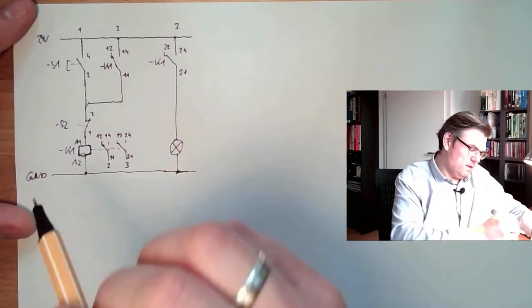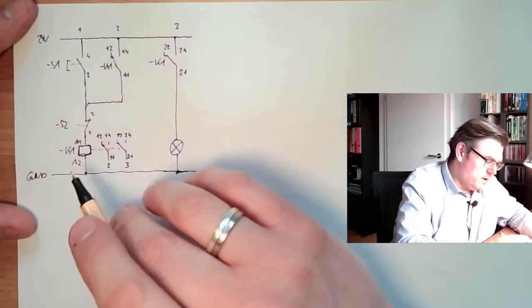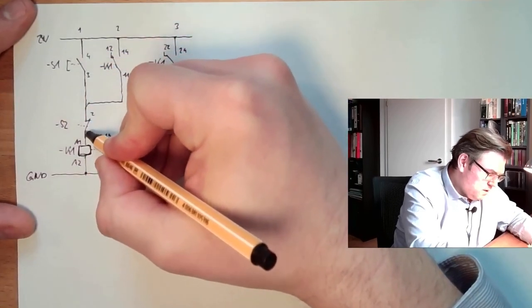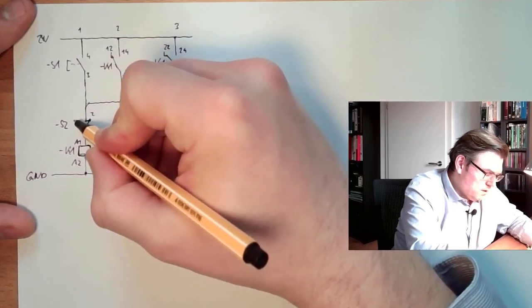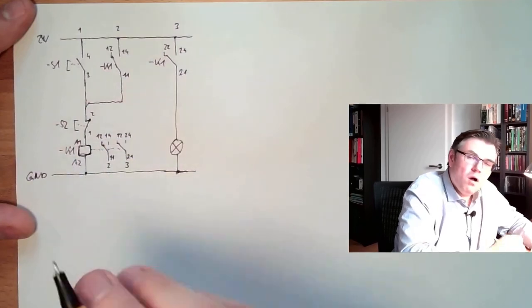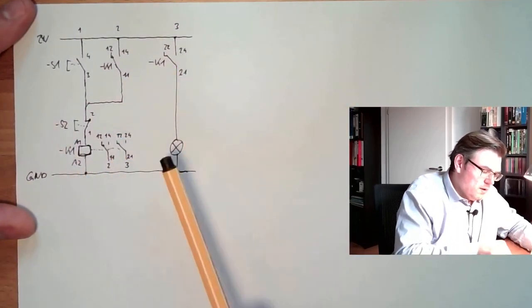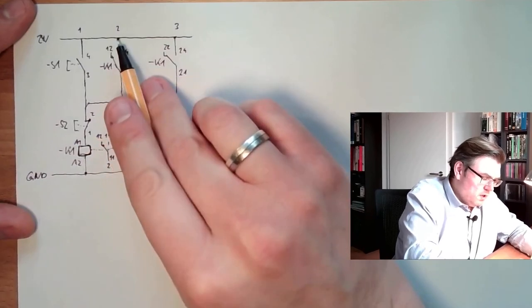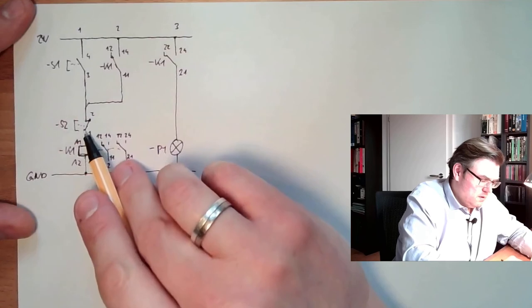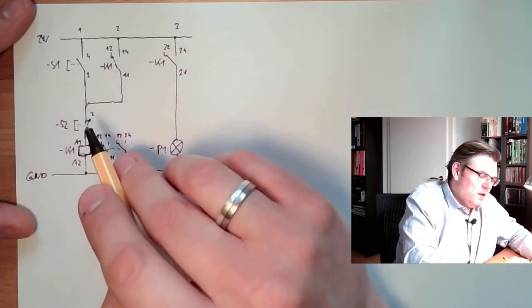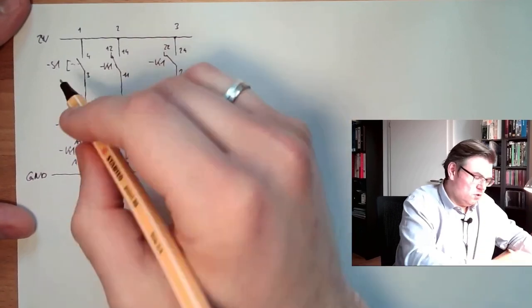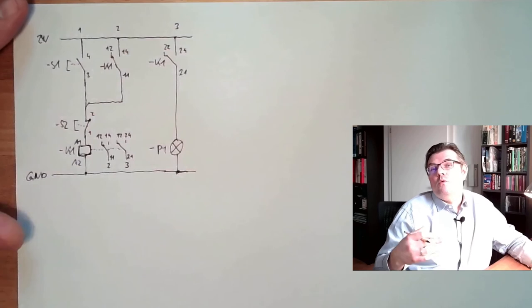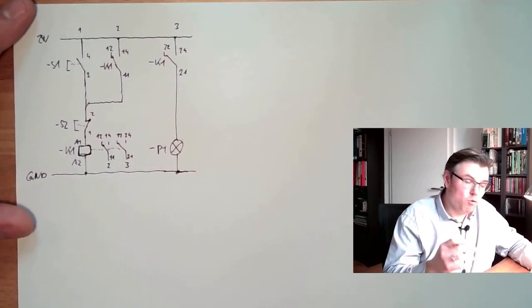Now we already have a little bit more complex switching. Let's think about what is happening. Now I press S1. Let's say it looks that way, K1 is not energized, it looks that way. Now I press S1, S1 will switch here. This is a normally closed contact, so I do not press S2, so K1 will be energized. If K1 is energized, P1 is lit, because this is. And the other thing which is happening, K1 is switching here on, and is bypassing my button here. Even if I release now S1, K1 holds itself.